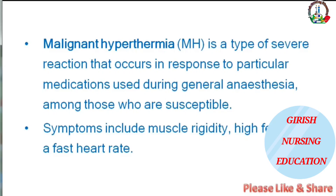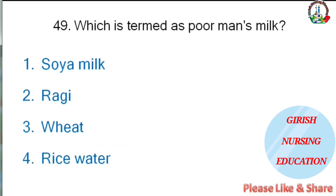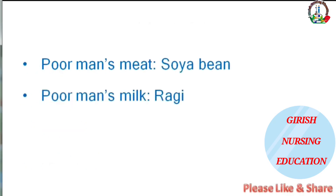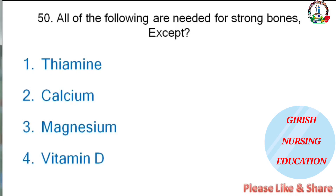Symptoms of malignant hyperthermia include muscle rigidity, high fever, and fast heart rate. Which is termed as poor man's milk — soya milk, ragi, wheat, or rice water? The correct answer is ragi. Note: poor man's meat is soya bean. All of the following are needed for strong bones except — thiamine, calcium, magnesium, or vitamin D? The correct answer is thiamine.